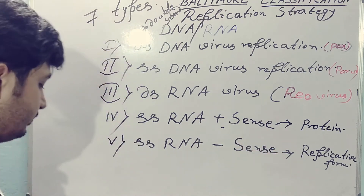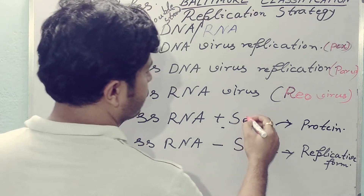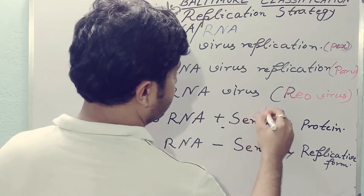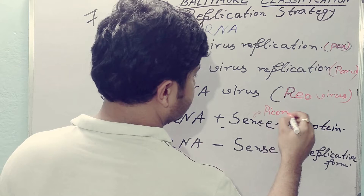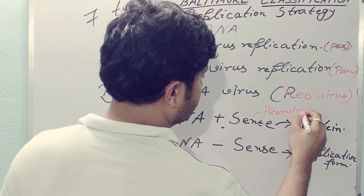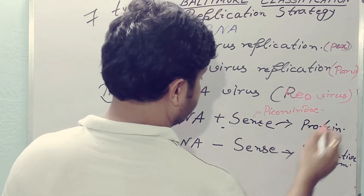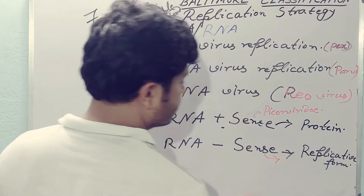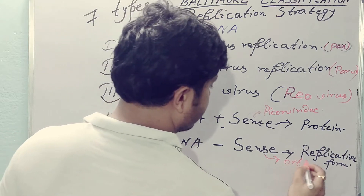As an example you can take picornaviruses or Picornaviridae for positive sense, and orthmyxoviruses as an example of negative sense RNA viruses.